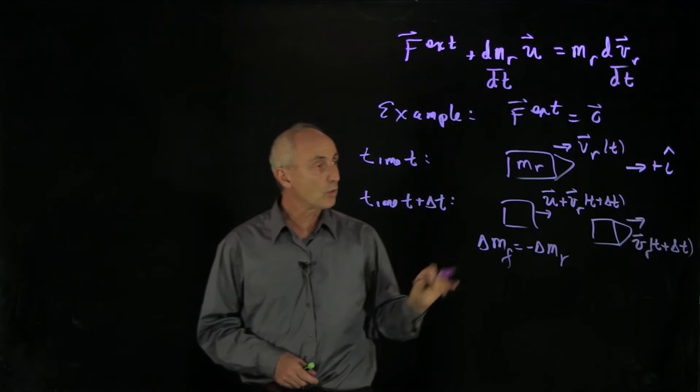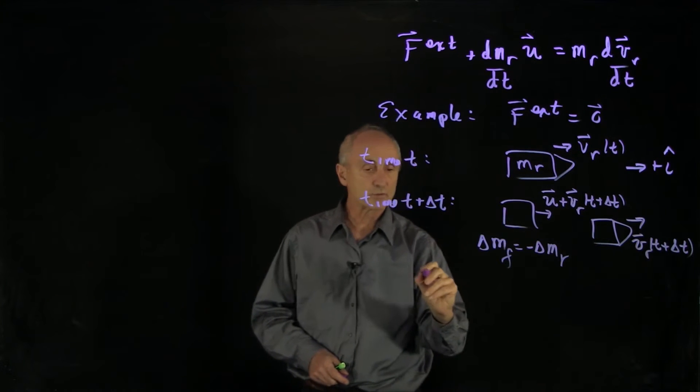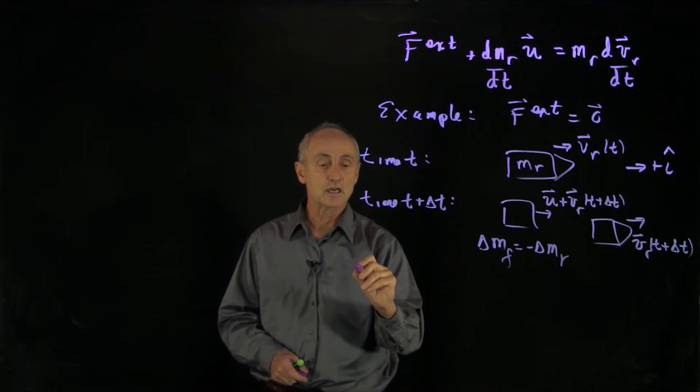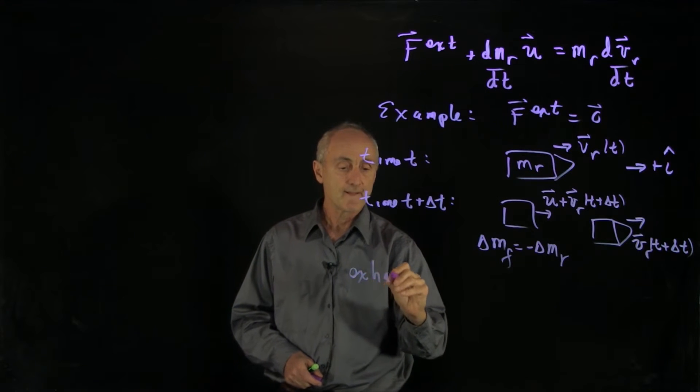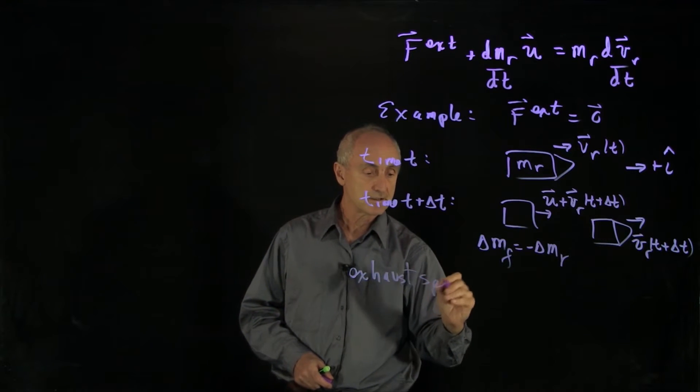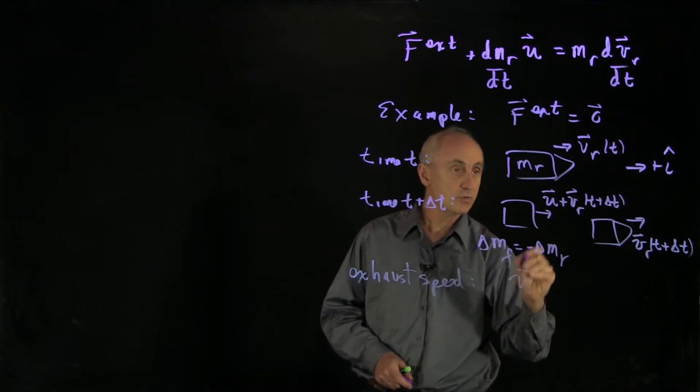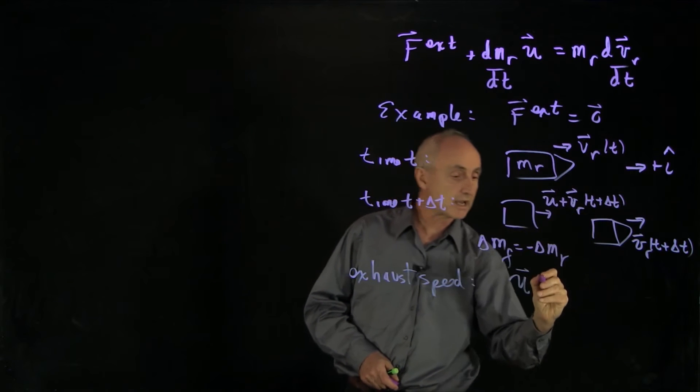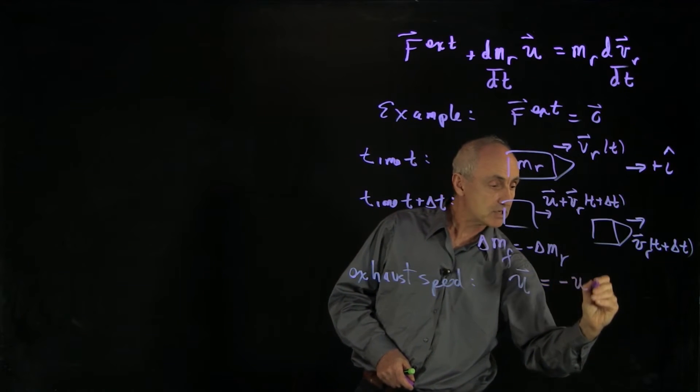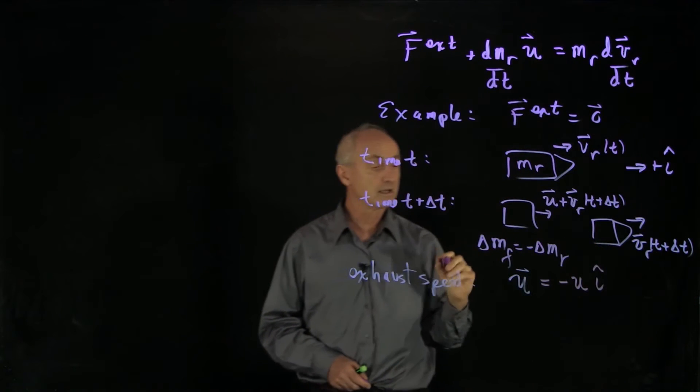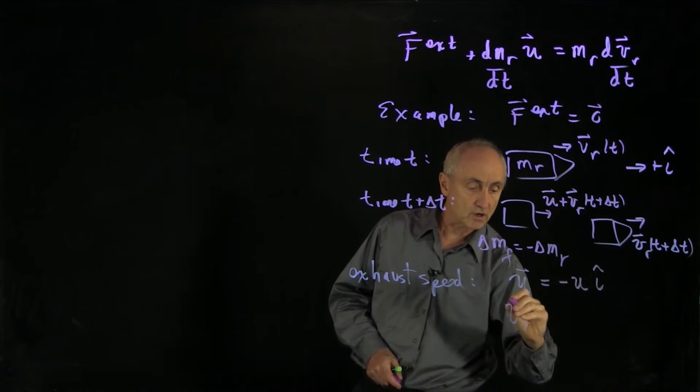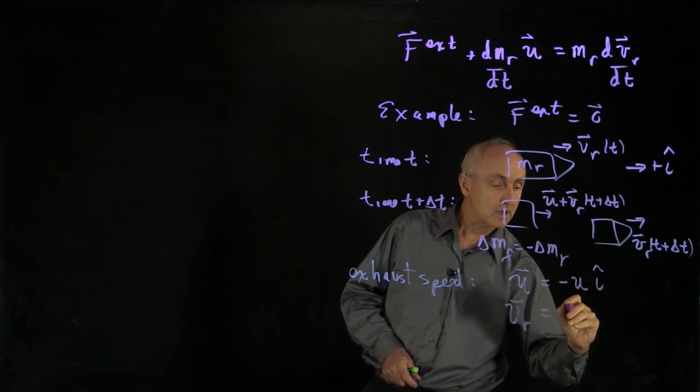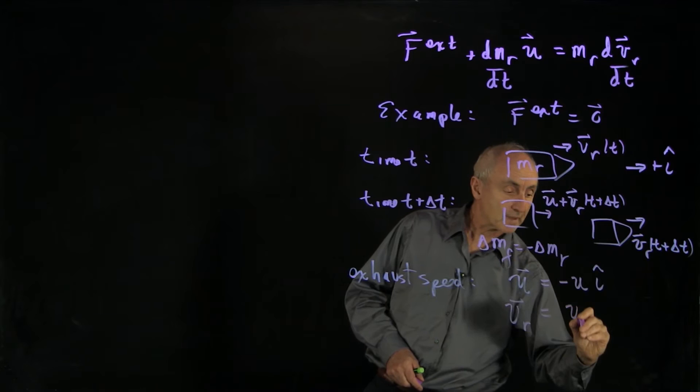So in our coordinate system, we have to remember that the exhaust speed is relative to the rocket. And we define that to be u. Since the rocket is moving forward, and we've chosen plus i-hat in that direction, it's minus u i-hat. And we can write our vectors v_r as v_r i-hat.